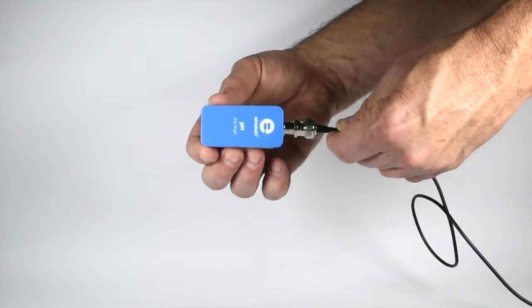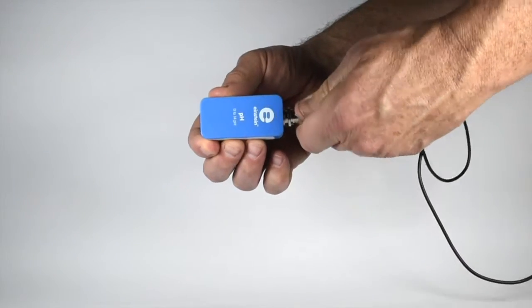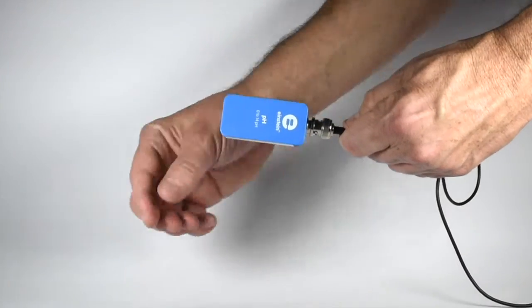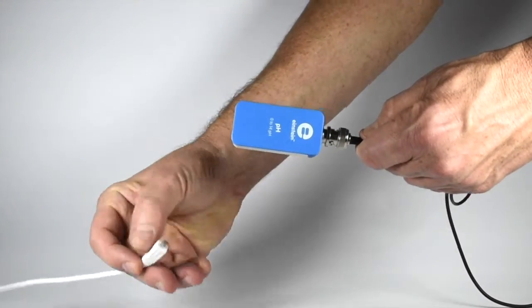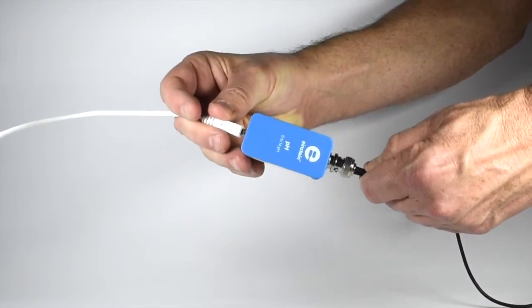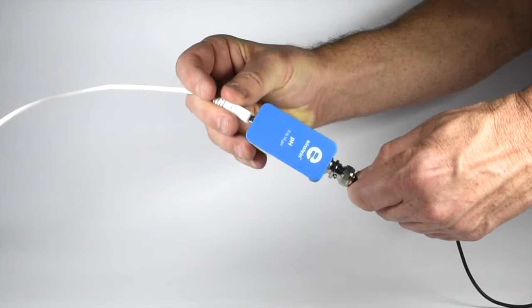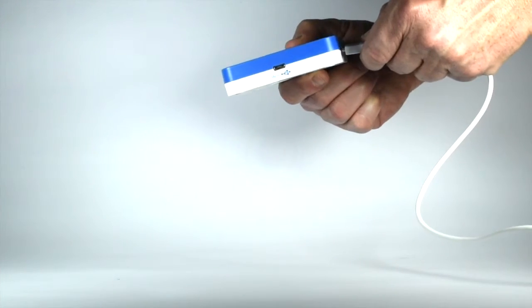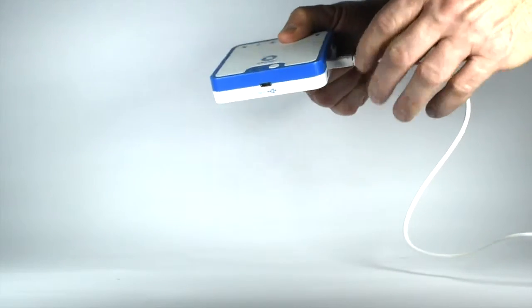To use the pH sensor, first attach the electrode to the sensor. Then attach one end of the cable to the sensor and the other to the sensor ports of your Einstein device.